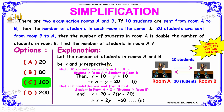From condition 1: if 10 students are sent from room A to room B, then the number of students in each room is the same. Since students are sent from A to B, student count in room A equals student count in room B. So we write the expression: X minus 10 is equal to Y plus 10.